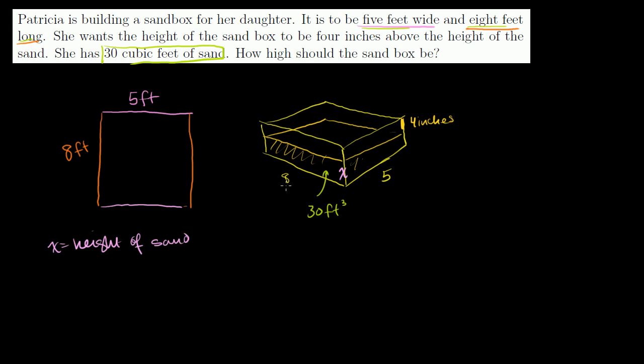So the total volume of our sand is going to be the height of the sand times the length of the box times 8 times the width of the box times 5, and this is going to be the total volume which they told us is 30 cubic feet.